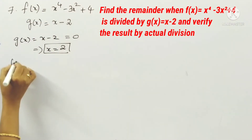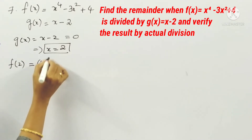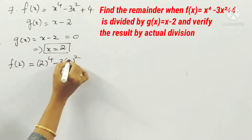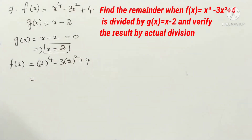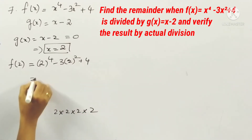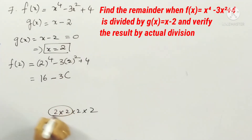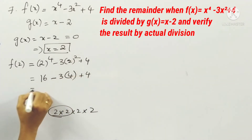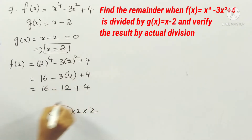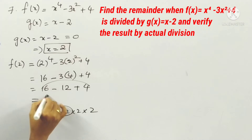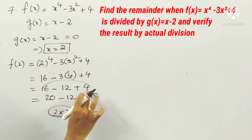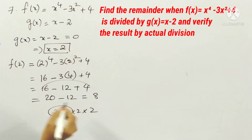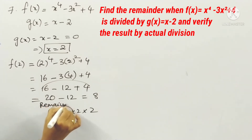So the remainder when g(x) divides f(x) will be f(2). f(2) = 2⁴ minus 3 into 2² plus 4. 2⁴ = 16, 3 times 4 = 12. So 16 minus 12 plus 4 = 20 minus 12 = 8. The remainder here is 8.